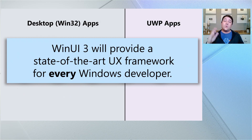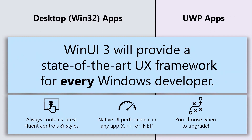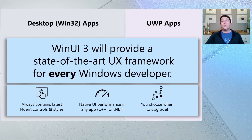All of this adds up to three big advantages that WinUI will provide for everyone. First, it'll offer cutting-edge Fluent controls and styles for apps that really care about having the very best user experience on Windows. Second, WinUI 3 itself is implemented in C++, so no matter whether you're using it from C++ or .NET, your UI will have native performance and won't pull in the .NET CLR on its own. And finally, because WinUI 3 will ship separately from the operating system, you get to decide when you upgrade — if you're happy with WinUI 3.1, you don't ever have to move to version 3.2.